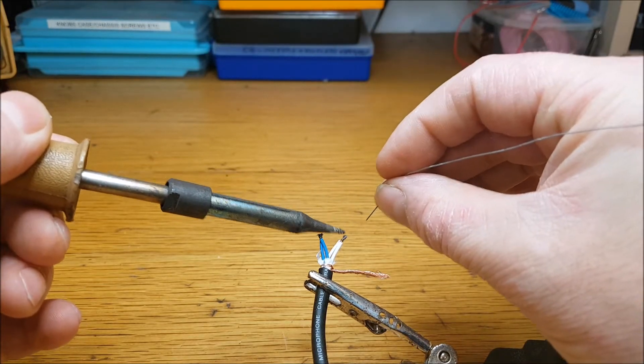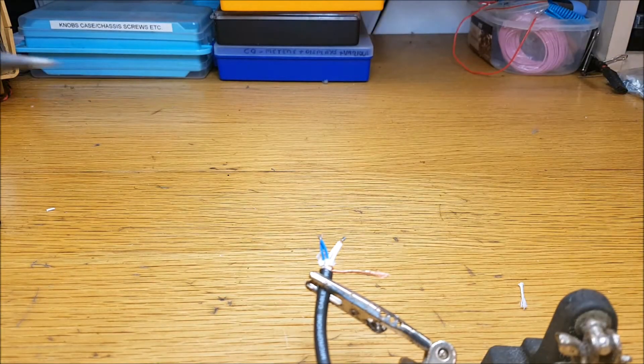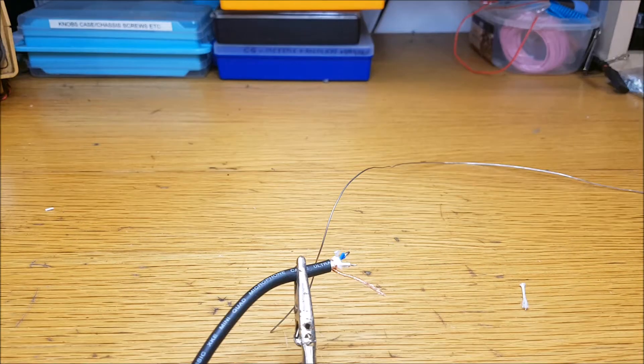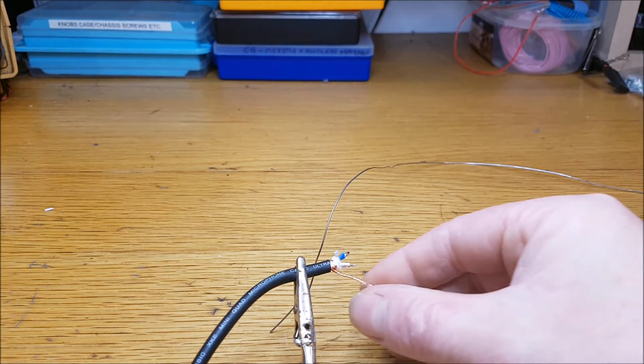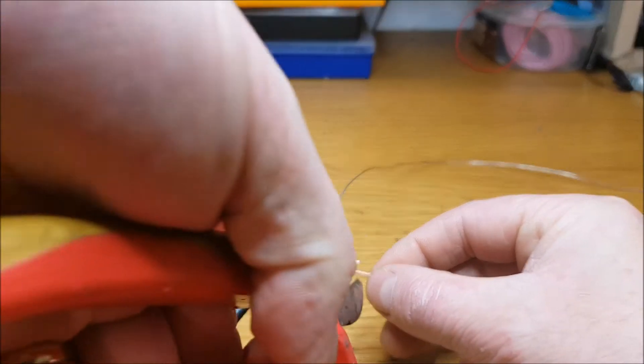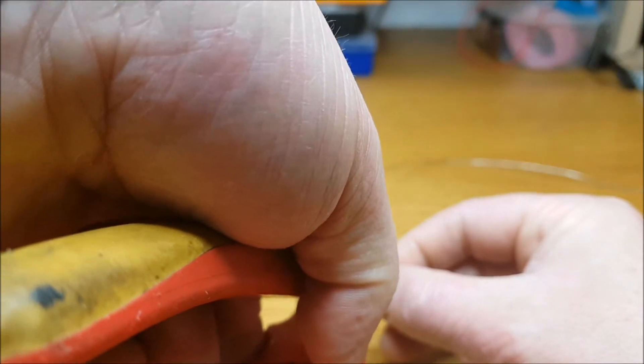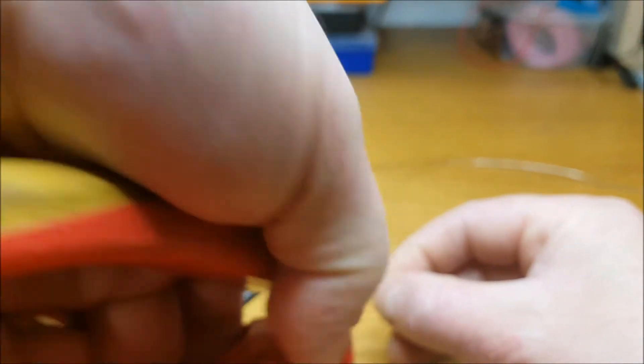Just makes it a lot easier when you're putting on the plug. Right, so you need to tin your braid as well, which you should snip to roughly the same length as the rest of them.